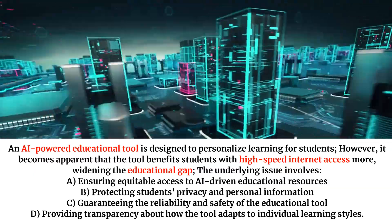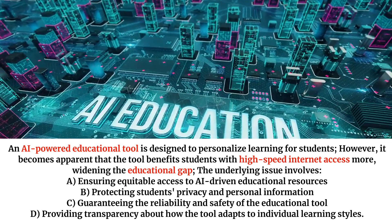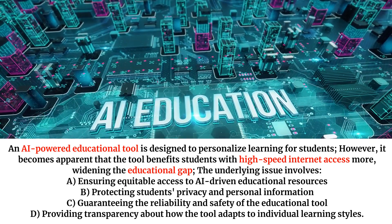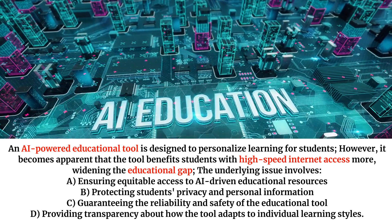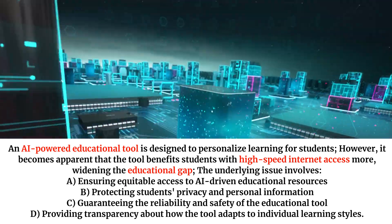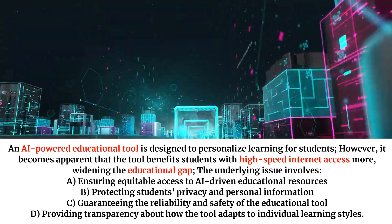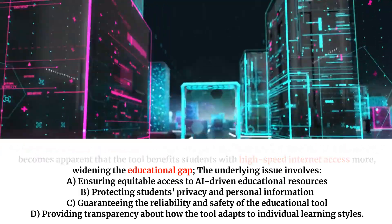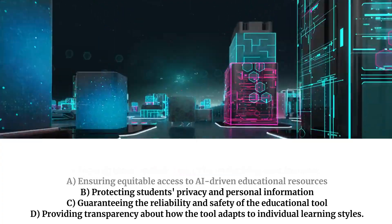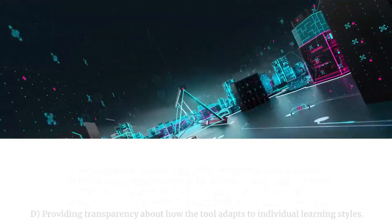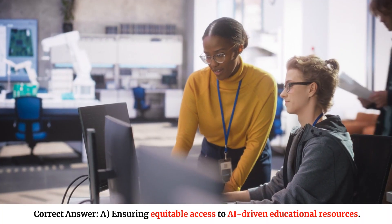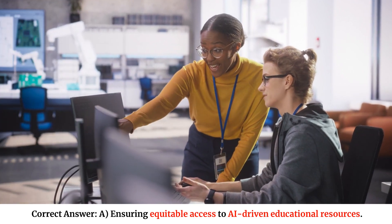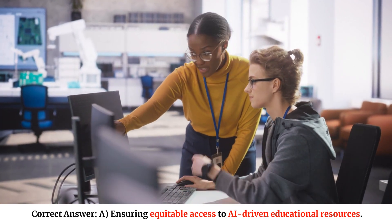The underlying issue involves: A. Ensuring equitable access to AI-driven educational resources. B. Protecting students' privacy and personal information. C. Guaranteeing the reliability and safety of the educational tool. D. Providing transparency about how the tool adapts to individual learning styles. Correct answer: A — Ensuring equitable access to AI-driven educational resources.